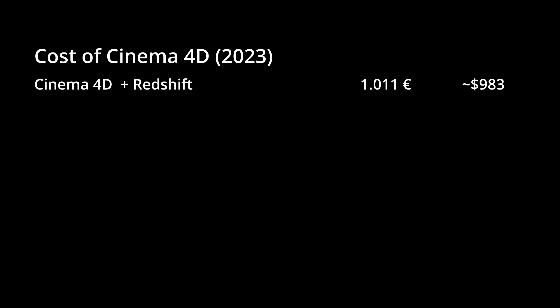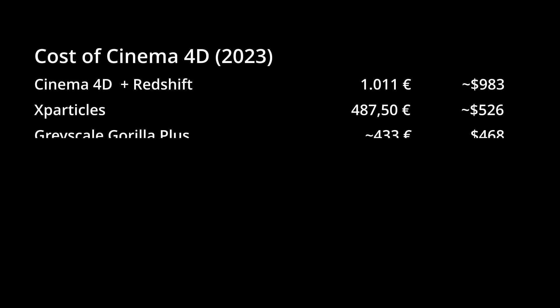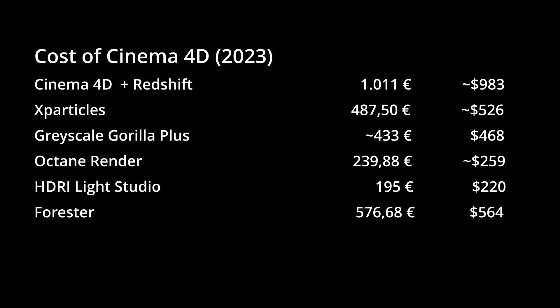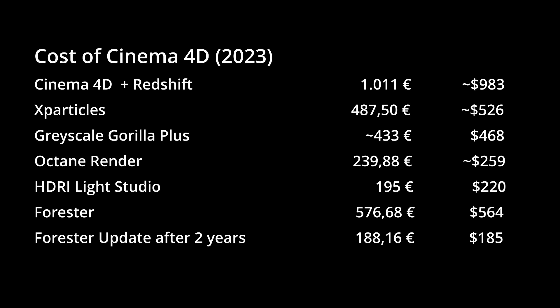Many tools now come with recurring costs. Cinema 4D with Redshift is about $980 annually and X-Particles is $520. Grayscale Gorilla charges $460, while Octane costs $260 per year. HDRI Light Studio is $220 and Forrester requires a one-time payment of $560, with updates after two years at $185 each. After a year, we own Forrester and updates are optional, but likely necessary for new Cinema 4D versions. These prices lead to an annual cost of approximately $3,000. After 10 years, the cost comes to over $30,000, or around $20,000 including all discounts and Black Friday deals.